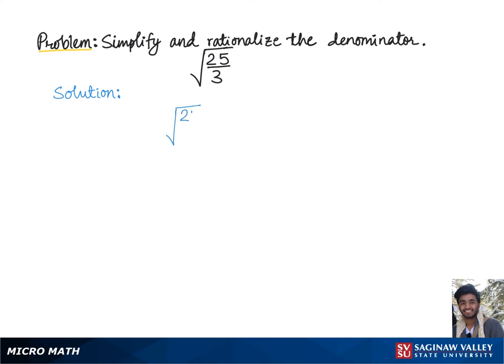To simplify square root of 25 over 3, we will see if we can write these numbers as multiples of perfect squares. And to rationalize the denominator 3, we need to somehow make it a perfect square.